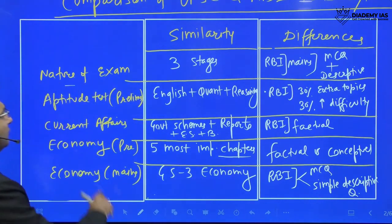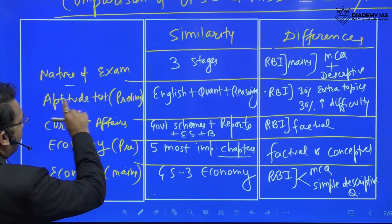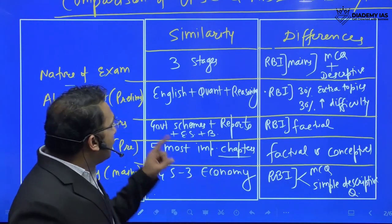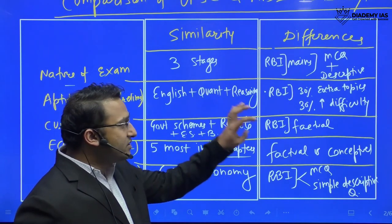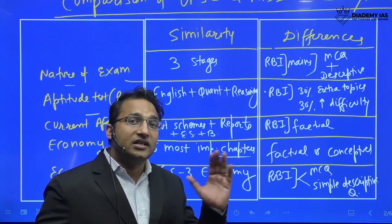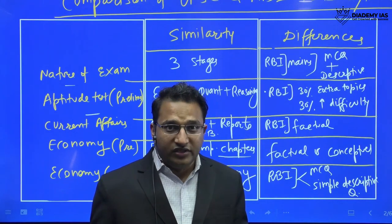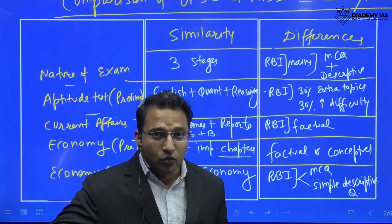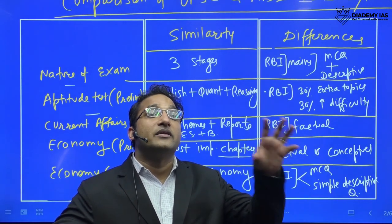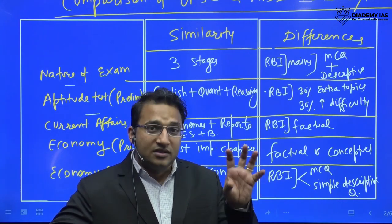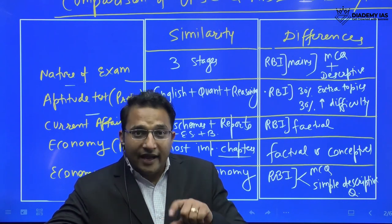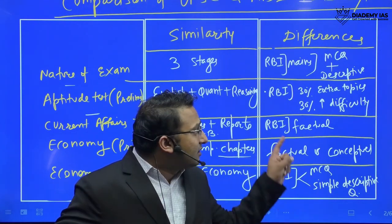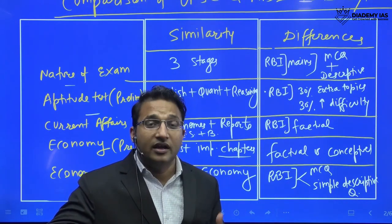On syllabus areas: there is an aptitude test in the UPSC prelims (CSAT), and this aptitude test is also present in RBI Phase 1 (RBI prelims). The common areas are English, quant, and reasoning — these three appear in both UPSC and RBI. The difference is that RBI has some extra topics not covered in UPSC. However, looking at the 2021–2022 pattern, CSAT is becoming more difficult, moving closer to RBI's aptitude level, and RBI covers a broader range of topics at a higher difficulty.